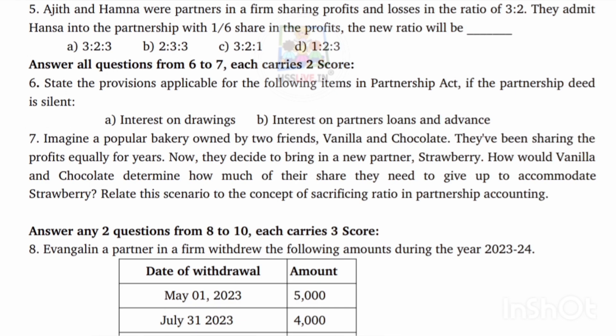Seventh question: Imagine a popular bakery owned by two friends, Vanilla and Chocolate. They have been sharing profits equally for years. Now they decide to bring a new partner, Strawberry. How would Vanilla and Chocolate determine how much of their share they need to give up to accommodate Strawberry? Relate this scenario to the concept of sacrificing ratio in partnership accounting. The sacrificing ratio is the share given up by old partners when a new partner is admitted.